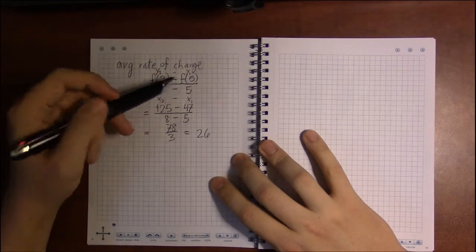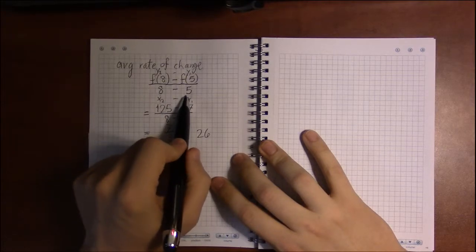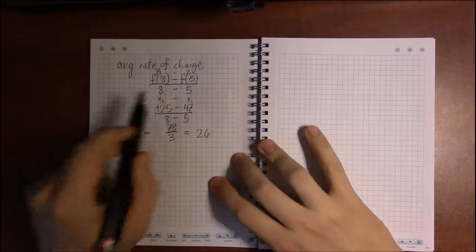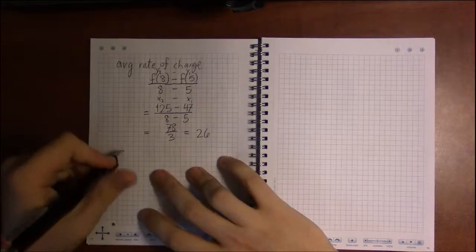That's the slope between the two points, one point where t equals 5 and the other point where t equals 8.